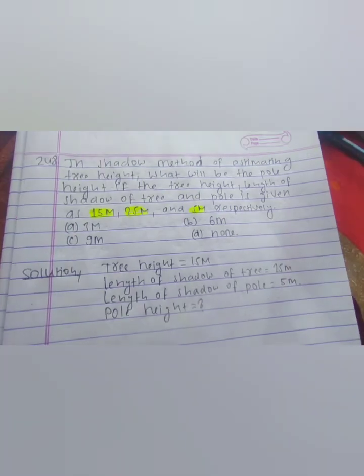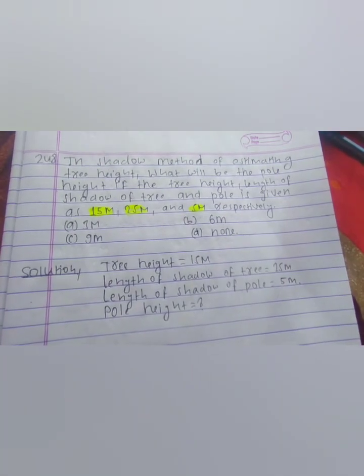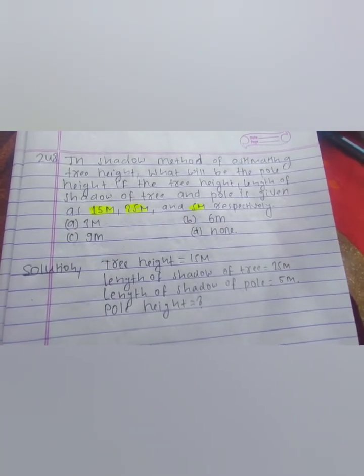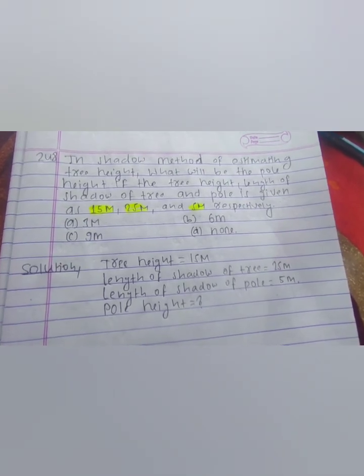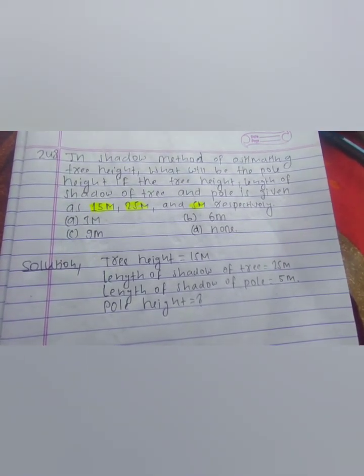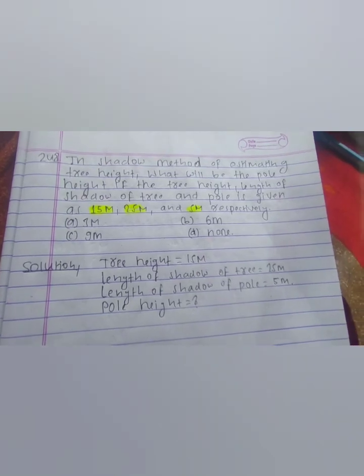...if the tree height, length of shadow of tree, and pole shadow are given as 15 meters, 25 meters, and 5 meters respectively? This means tree height is 15m, tree shadow is 25m, pole shadow is 5m, and you have to calculate the pole height.